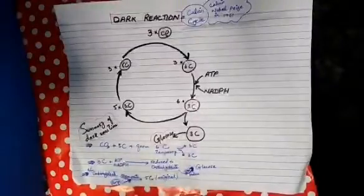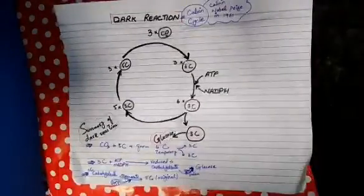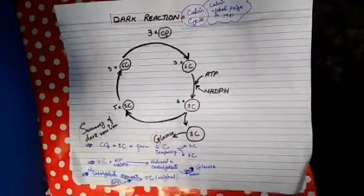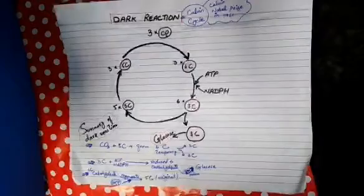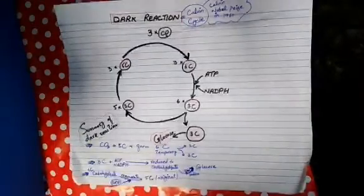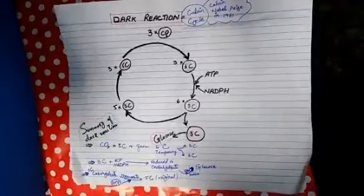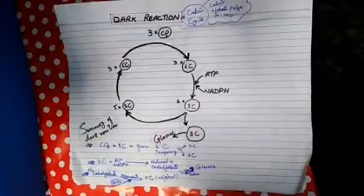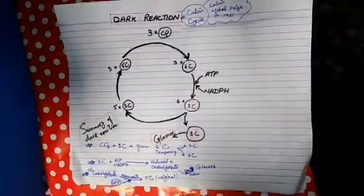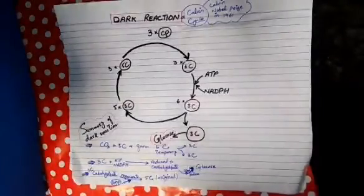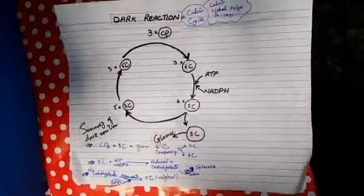Asalaamu alaykum students. In our previous lecture, we studied about the summary of light reaction. The topic we are going to discuss today is about the mechanism of photosynthesis, which involves light reaction and dark reaction. The summary of light reaction we already discussed in our previous lecture. Today we are going to discuss about the dark reaction.